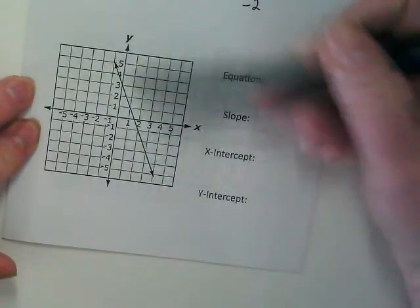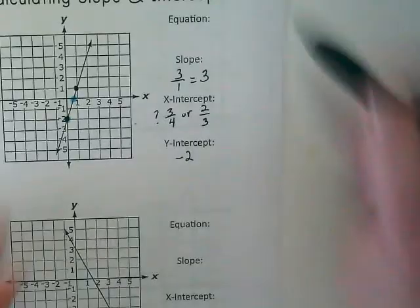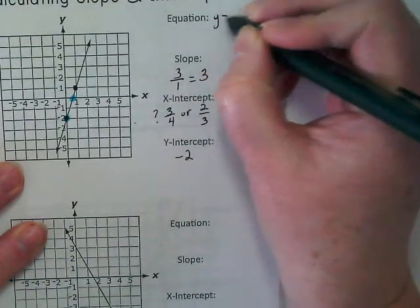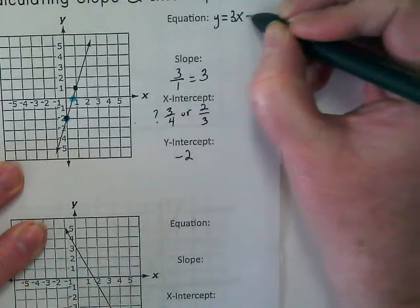If it's this one, what symbol is going to have to go in front of my slope? I have my slope, and I have my y-intercept. So I can write this equation, y equals 3x minus 2.